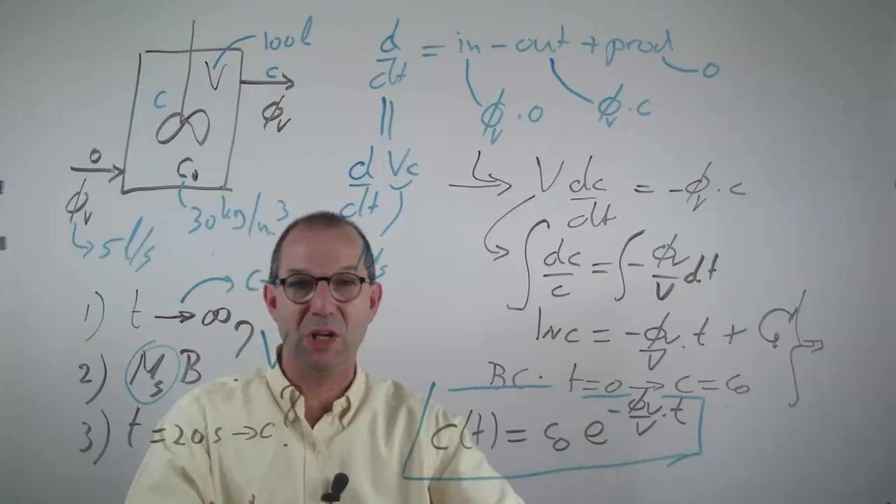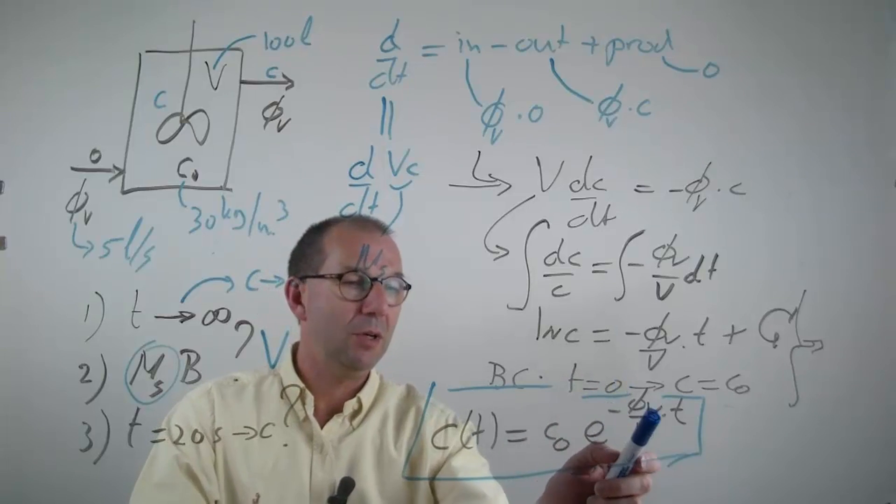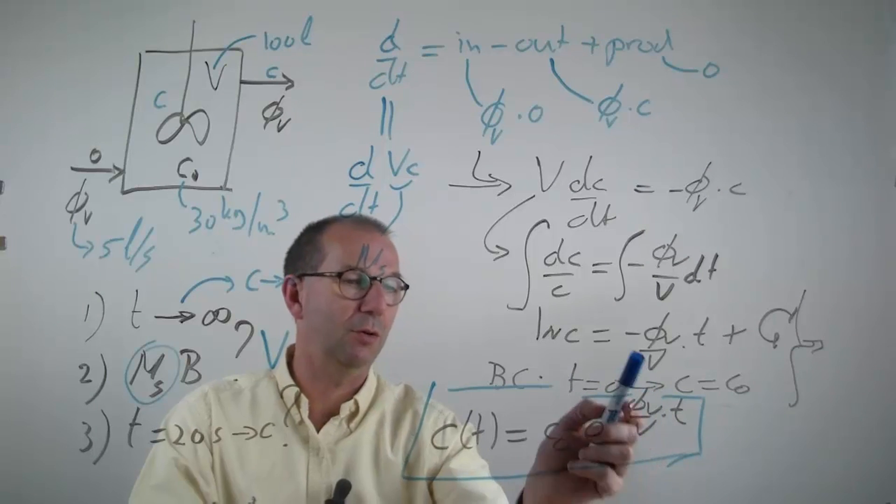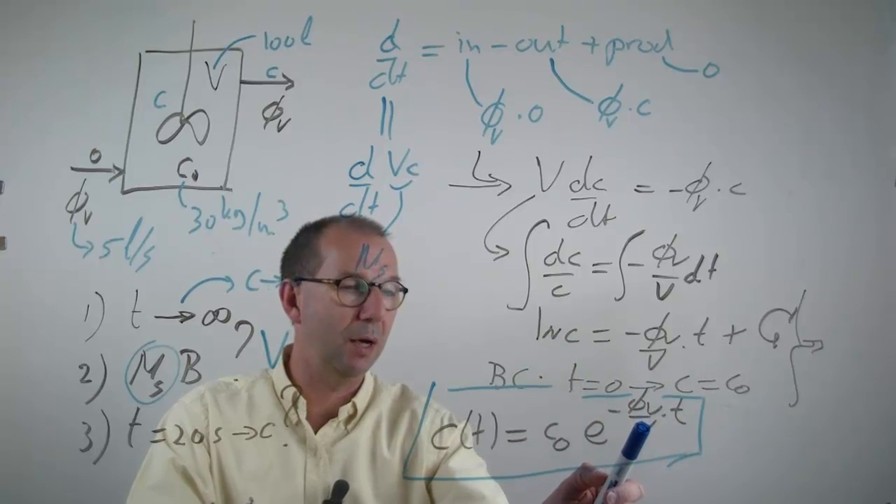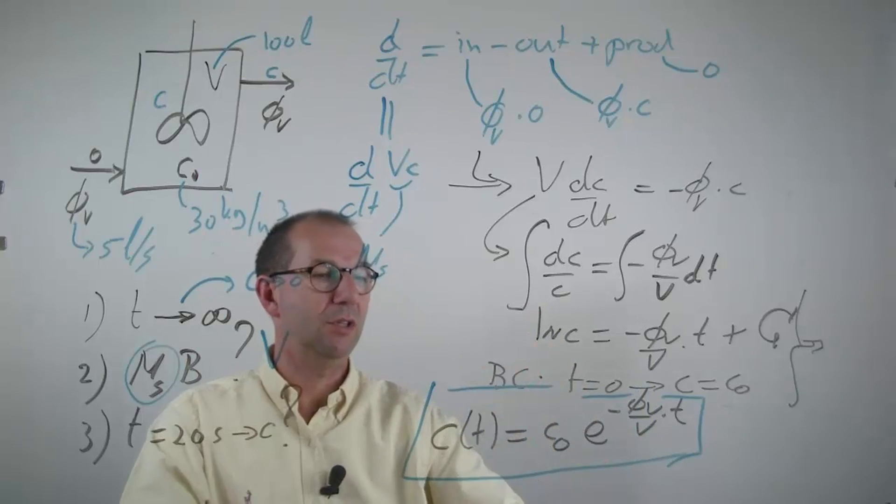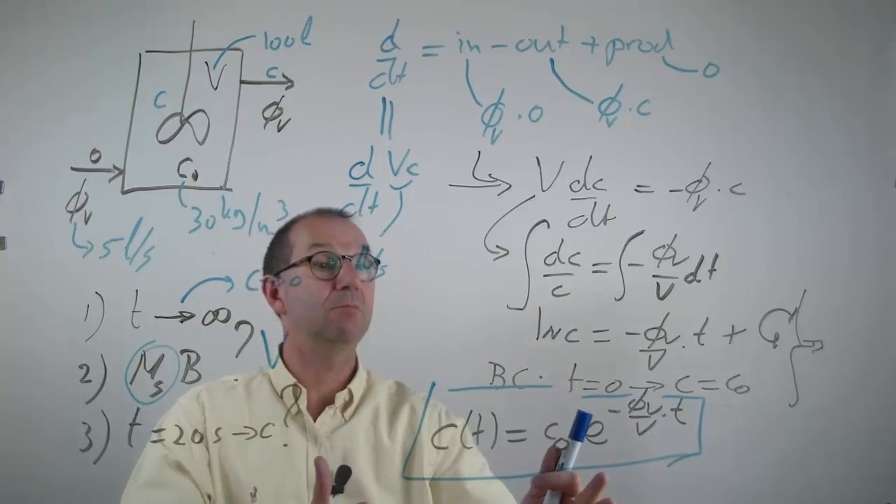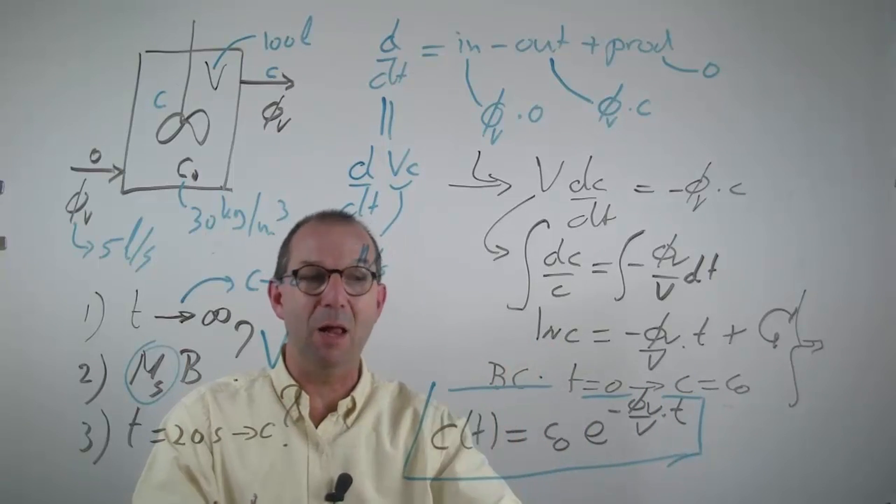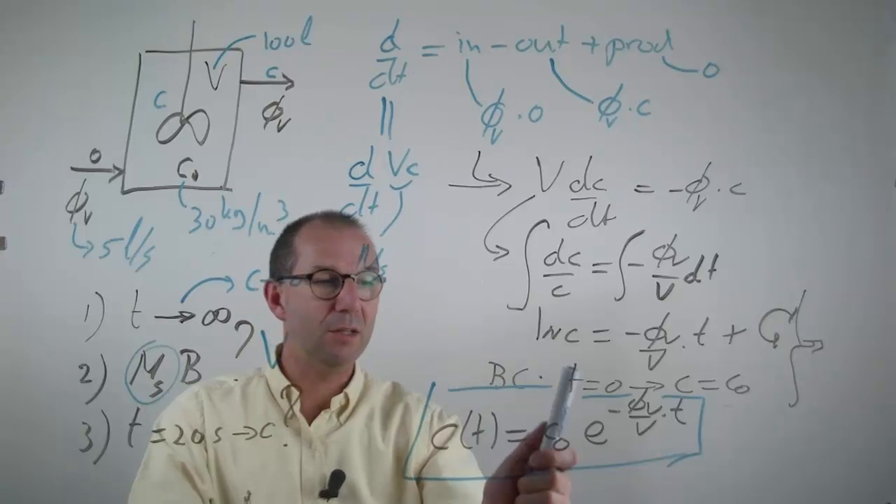But it is an exponent of something and that should be dimensionless. You cannot take the exponent of 7 seconds. Let me inspect the dimensions here. Cubic meter per second for the flow rate, divided by cubic meter. That leaves 1 over seconds, multiplied by time, dimensionless. So that's correct, dimensionally OK, which is a big help.